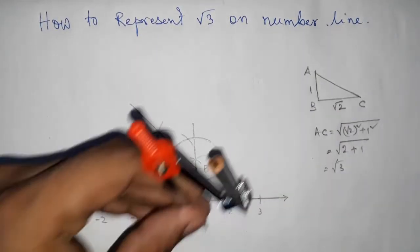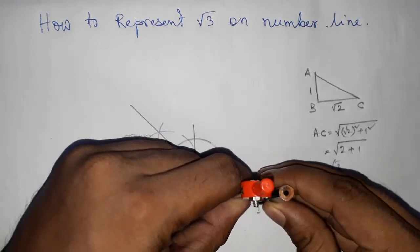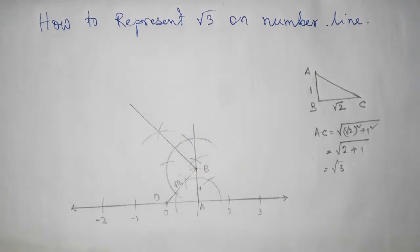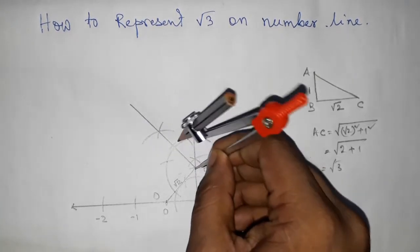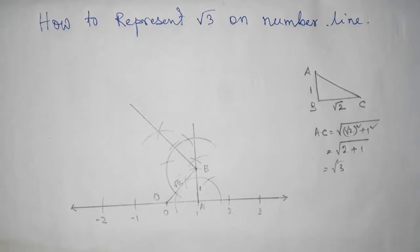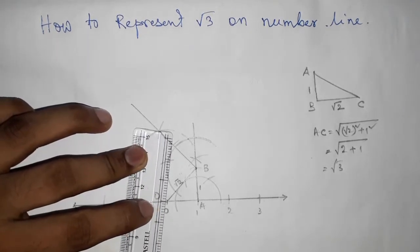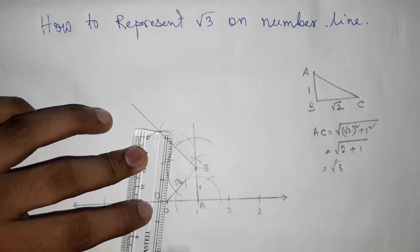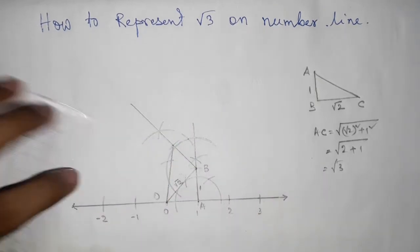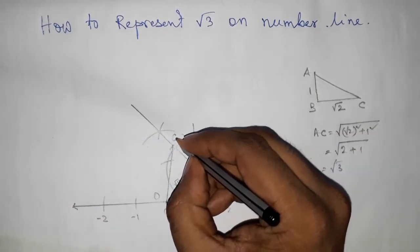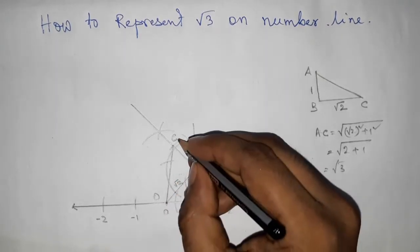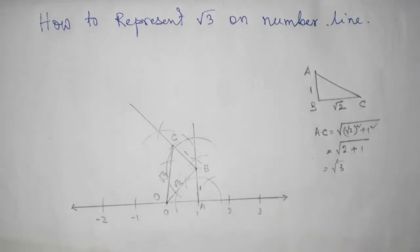Now taking the length between any two numbers - all numbers are equal length - so putting here and cutting. Now joining these two points. So this point is C. So OBC is a right angle triangle. So this is one and this is root 3.